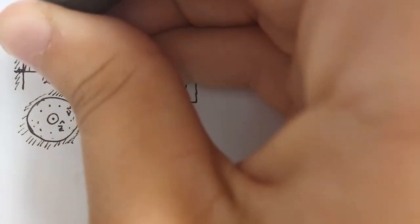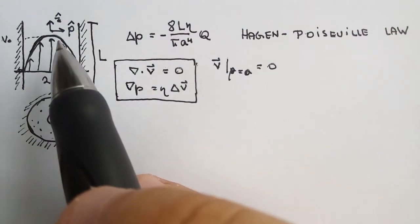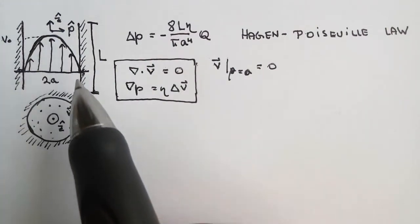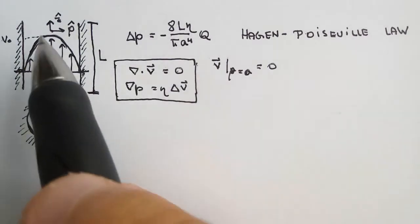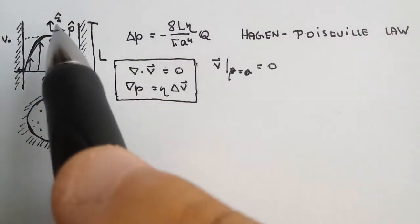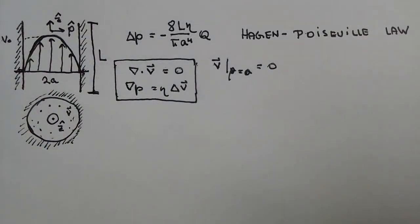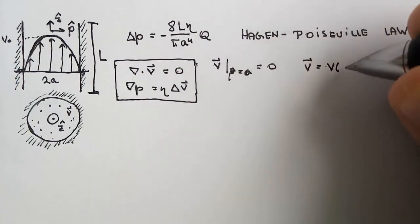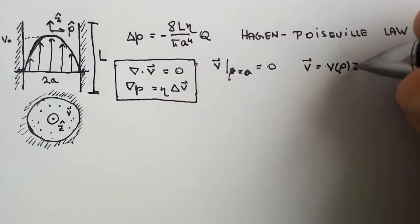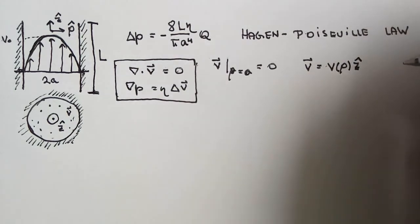We denote V_0 as the maximum velocity. It will turn out that the velocity profile is parabolic. The flow is moving in the Z direction and is axially symmetric. The assumption we make for the velocity field is that it takes the form V = V(rho) * z-hat — a convenient assumption.